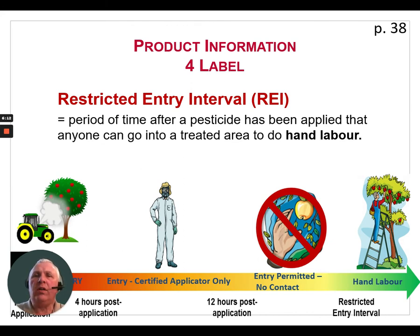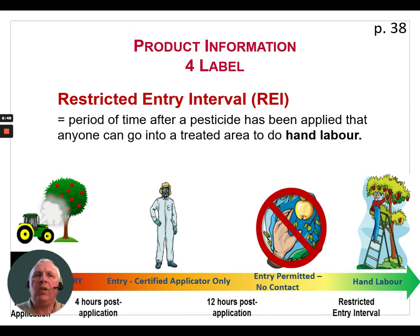From four hours to twelve hours post-application, entry can only be completed by a certified applicator wearing all proper personal protective equipment. After twelve hours, entry is permitted but there must be no contact with the treated plants — for example, you could enter a field of five-leaf corn, but cannot touch the growing plant. After the full 24-hour REI has elapsed, you're free to do hand labor, take samples, or whatever you like, as there should be no risk to people or animals.